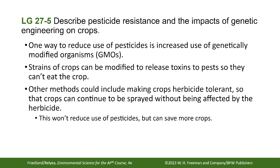Another GMO method makes crops herbicide tolerant so the field can be sprayed without harming the crop. This won't reduce pesticide use but it can save more crops. The whole goal for a farmer is to maximize output — choosing a corn stock that grows 10 bushels over one that grows one, using GMOs and pesticides to protect crops. It's all a cycle driven by making money. That concludes Module 27.